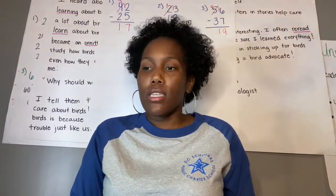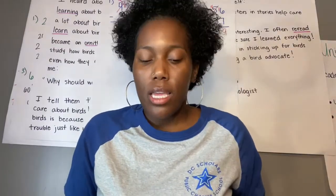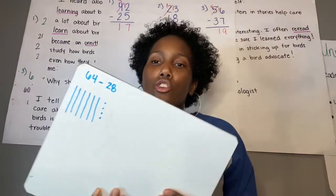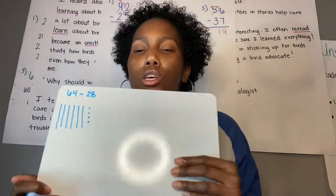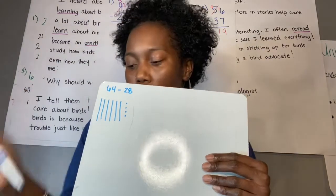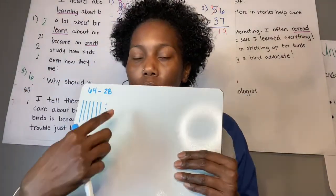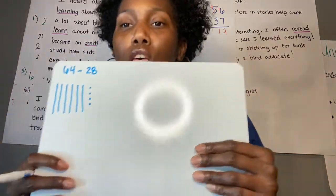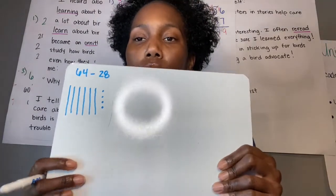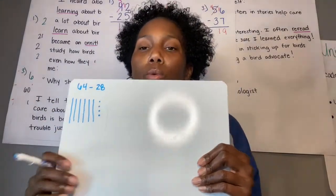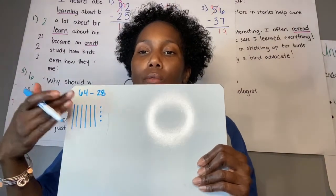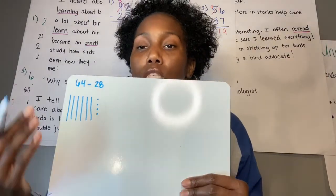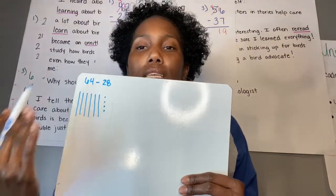Our first problem for today is 64 minus 28. For subtraction purposes, we're just going to draw the 64. Each one of my long lines is equal to 10, and each one of the little dots is just equal to one cube. The problem is 64 minus 28. If this was addition, I would write both numbers and add them together, but this is subtraction. So I'm not going to draw the 28, because I want to take that away.